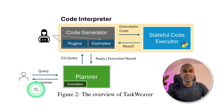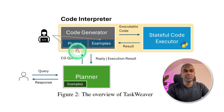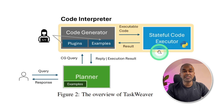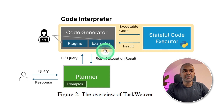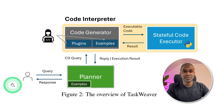So how does this work? When a user sends a request, the planner agent creates a list of tasks to do and sends it to the code generator. The code generator uses the plugins and examples to create the code, which is sent to the code executor. It's a stateful code executor, which means it remembers every single step it took during execution, even if any error occurred. Finally, the planner prepares a proper reply and gives the execution results to the user.